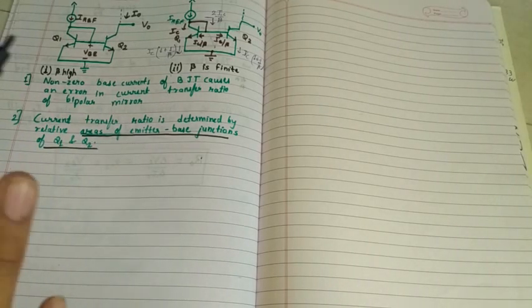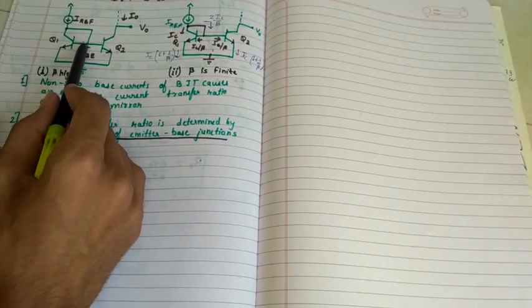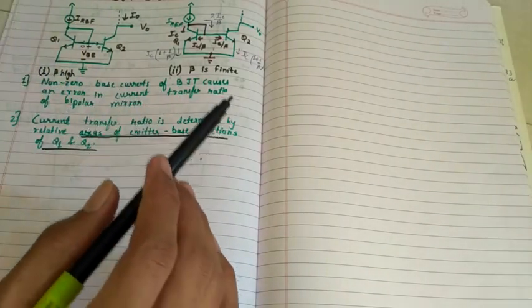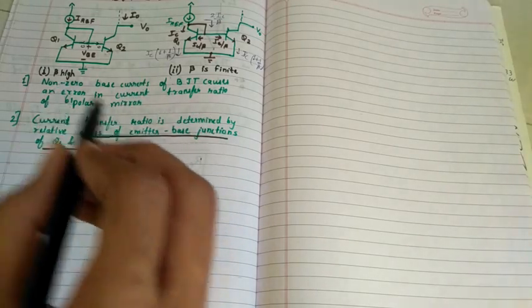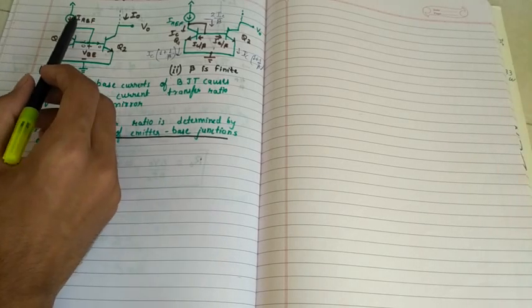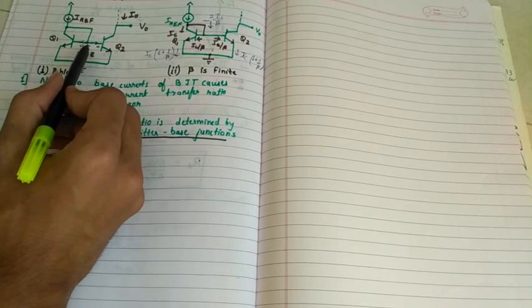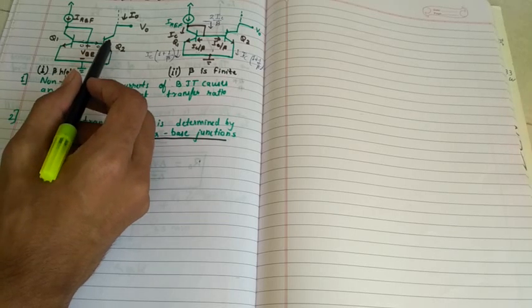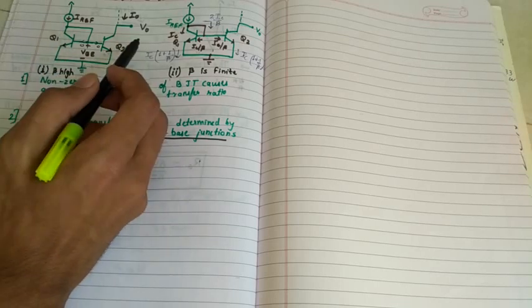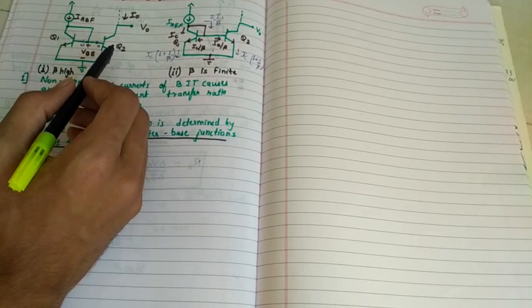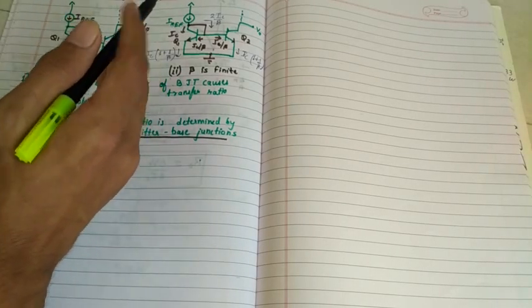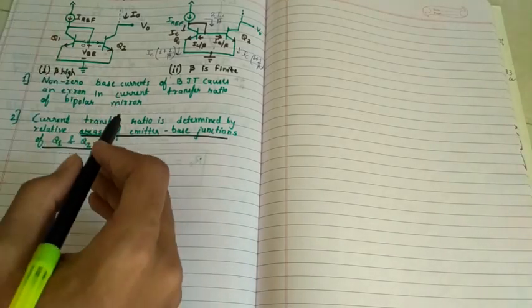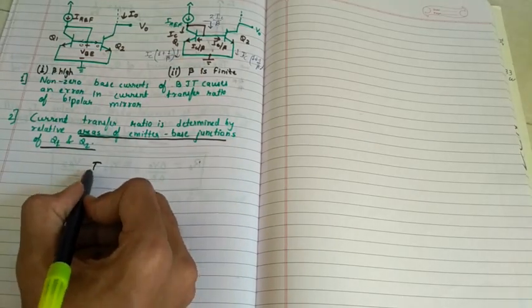First case, we consider beta is very high. In this case, the base current is zero, simple case just like MOS. Neglecting base current, I-reference is passed through diode-connected transistor Q1 and establishes corresponding voltage VBE. This VBE is applied as base-to-emitter voltage of transistor Q2. Assuming Q1 and Q2 are matched, it implies that emitter-base junction area of Q2 is same as that of Q1. Thus, I0 current is same as I-reference.